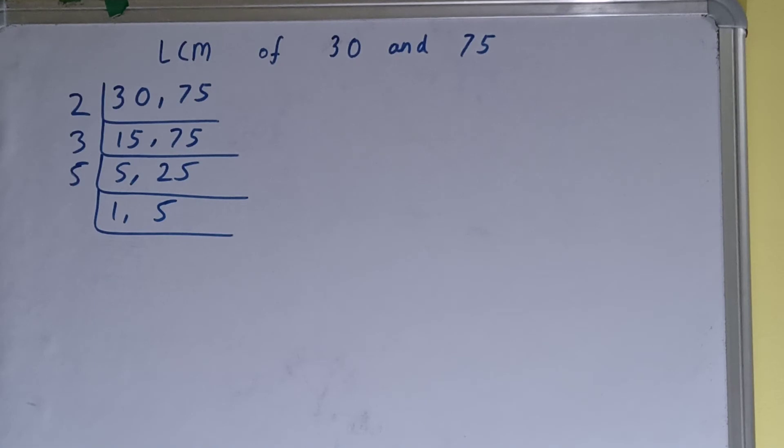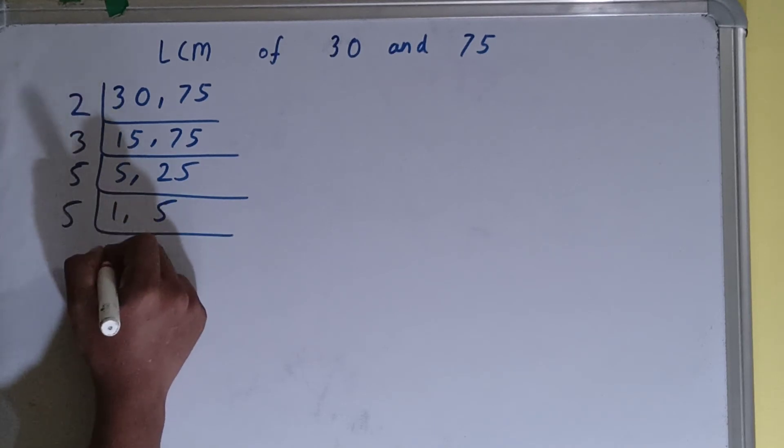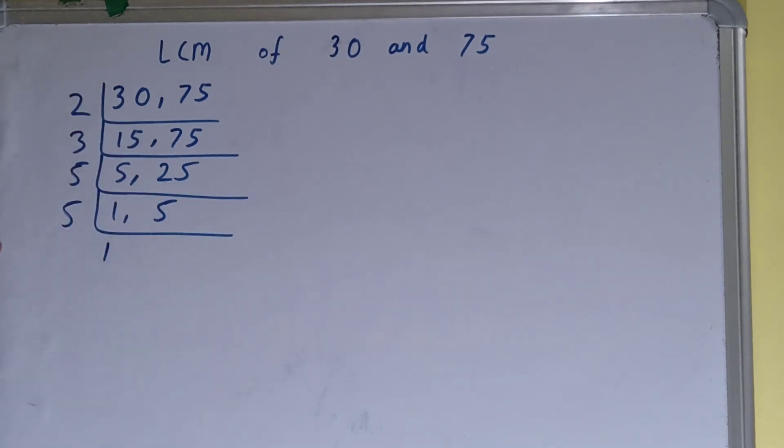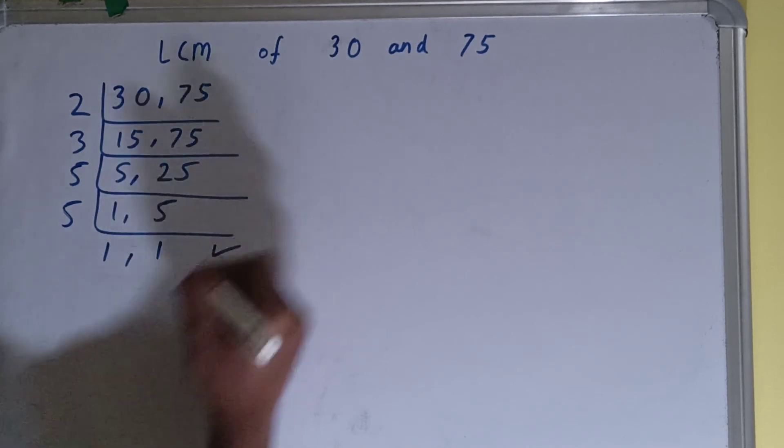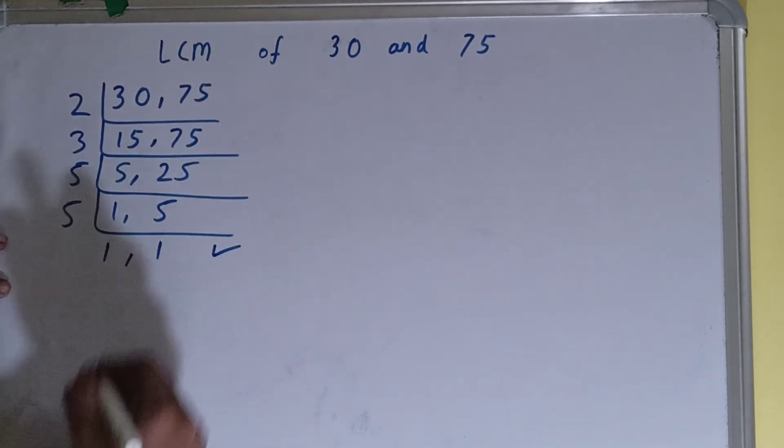If we check again, is any number divisible by 5? The second number is divisible by 5, so we'll divide. The first number is not divisible, so we'll just copy this down. The second number will become 1 on dividing. Once we get that, we need to stop.